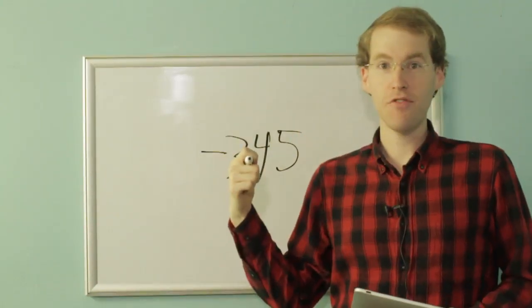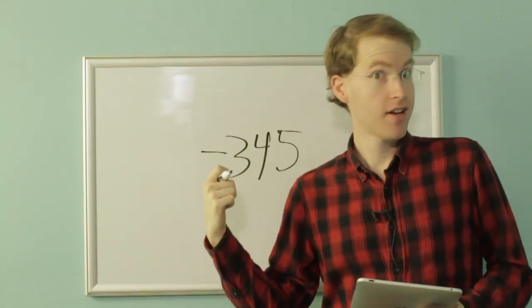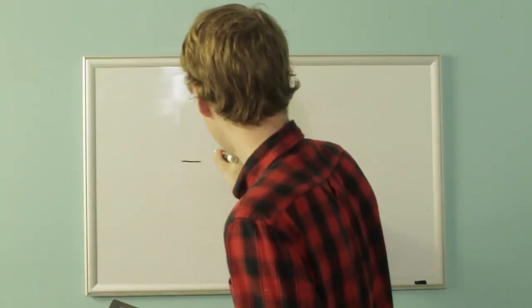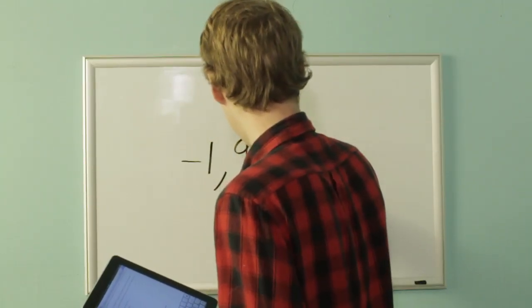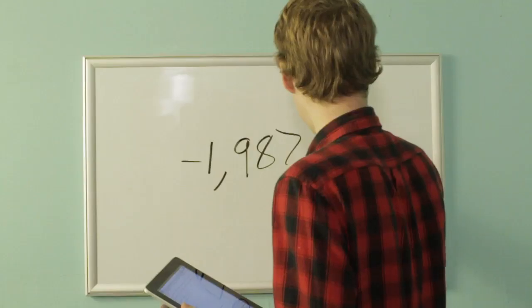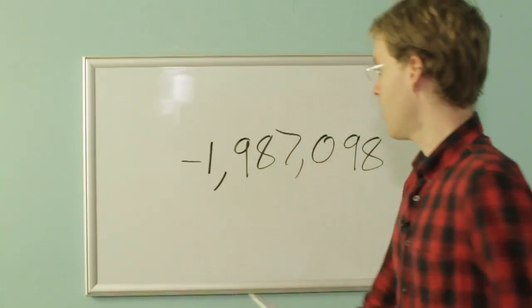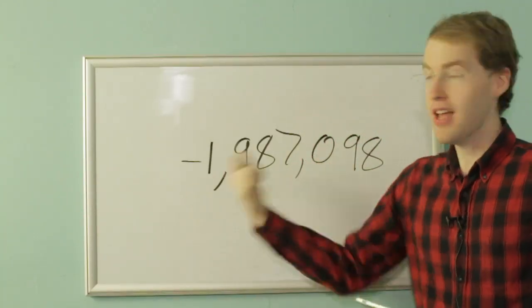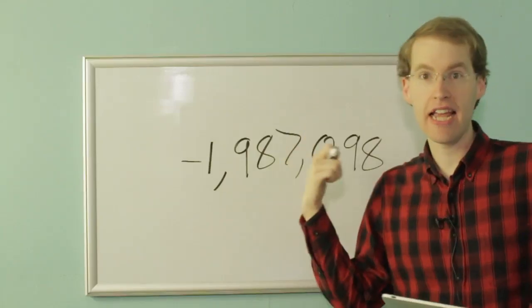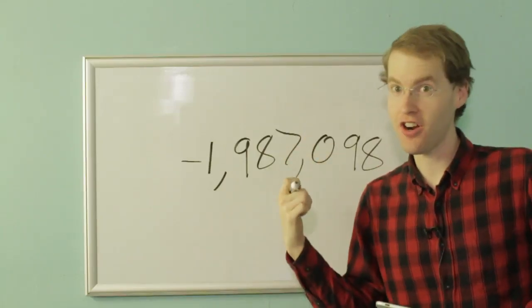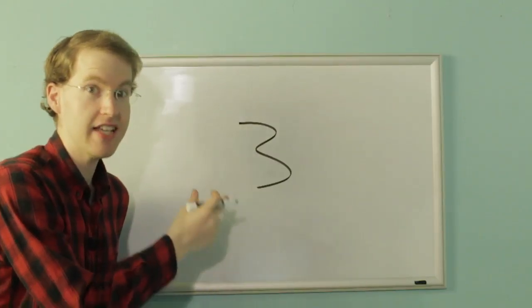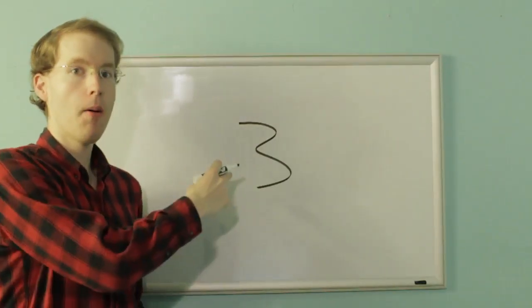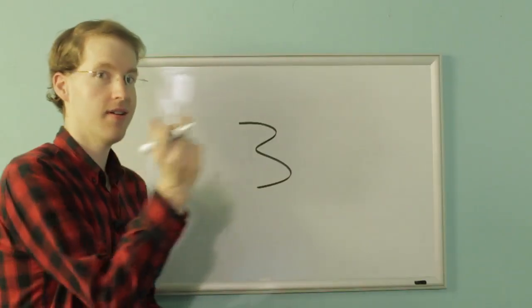Negative 345, integer. Negative 1,987,098, integer. Negative whole number. Is 3 an integer? Yes. Whole number. Whole positive number. Integer.